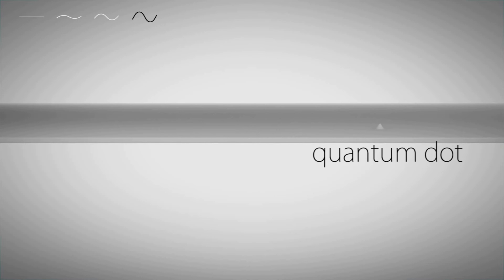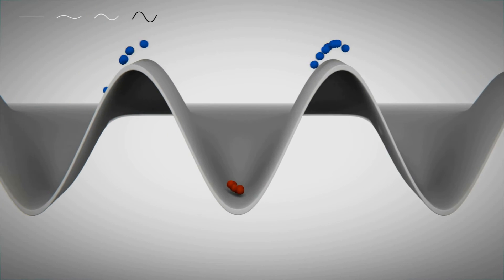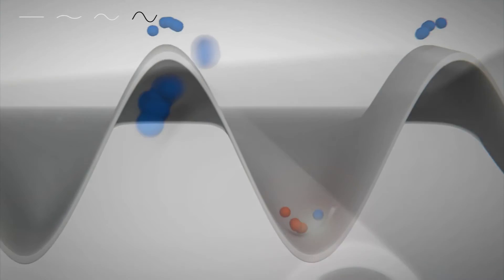Now the quantum dots come into play. As the surfing electrons arrive, one of them is captured inside. One half period of the acoustic wave later, holes arrive at the quantum dot and one of them is caught. It recombines with the electron.